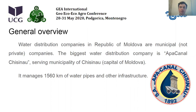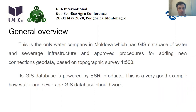Water distribution companies in the Republic of Moldova are municipal, not private companies. The biggest water distribution company is Upper Canal Kishinev, serving the Municipality of Kishinev, capital of Moldova. It manages 1,560 kilometers of water pipelines and other infrastructure. This is the only water company in Moldova which has a GIS database of water and sewerage infrastructure and approved procedures for adding new connection geodata based on topographic survey 1 to 500. Its GIS database is powered by ESRI products. This is a very good example of how a water and sewerage GIS database should work.